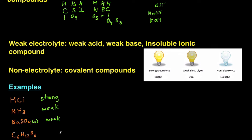And lastly, C6H12O6, or just glucose — that is a covalent compound that is neither an acid nor a base, so it's going to be a non-electrolyte because it will not dissociate into any ions.